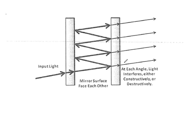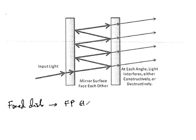The Fabry-Perot interferometer consists of two flat parallel, but semi-transparent mirrors, separated by a certain distance. When the distance is fixed, we call this the Fabry-Perot Etalon. If the distance can vary — as in the lab setup we have — it is known as the Fabry-Perot interferometer.